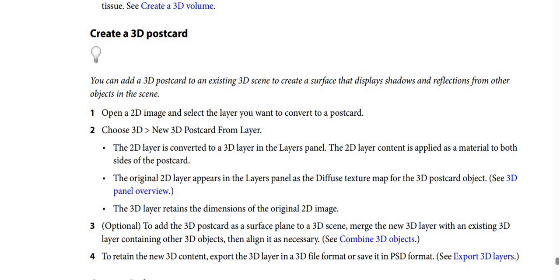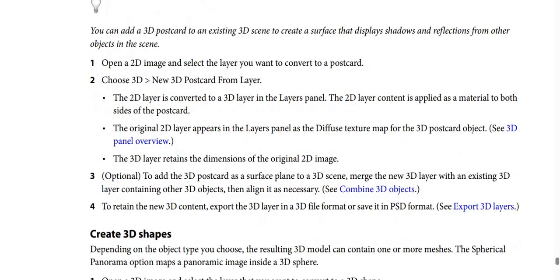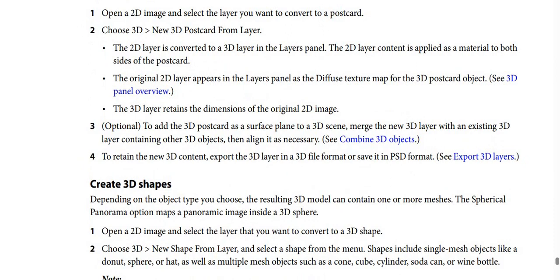The 2D layer content is applied as a material to both sides of the postcard. The original 2D layer appears in the Layers panel as a diffuse texture map for the 3D postcard object. The 3D layer retains the dimensions of the original 2D image.